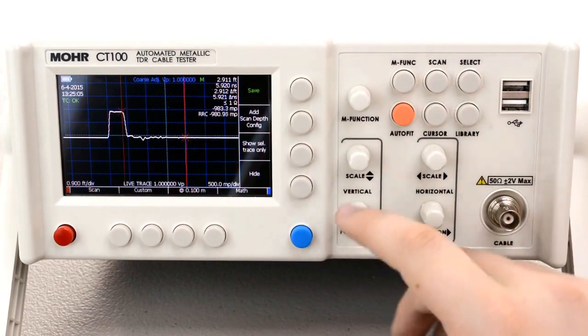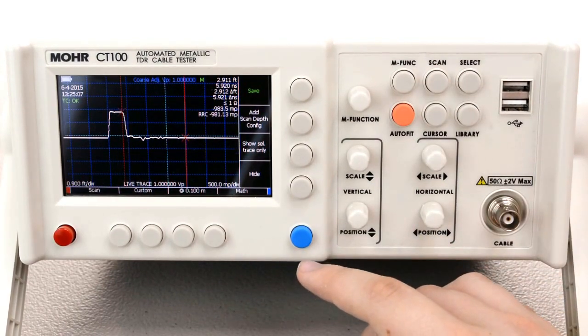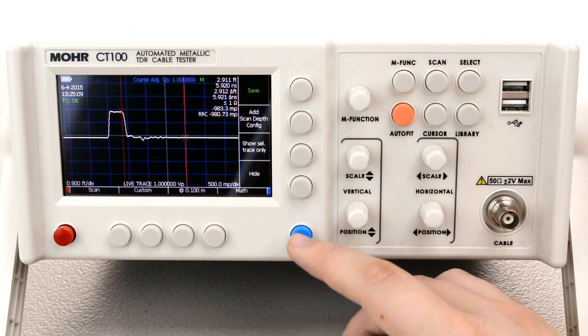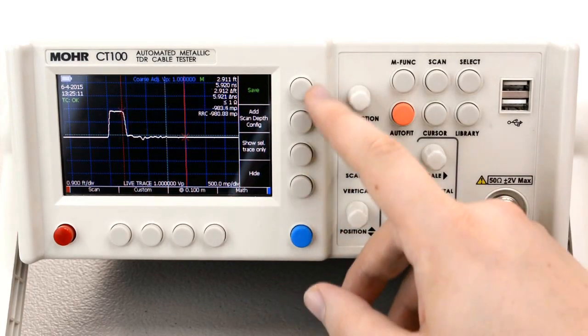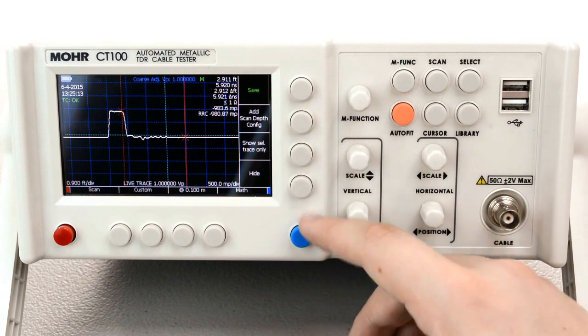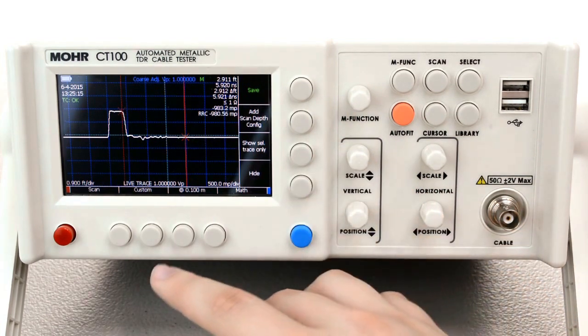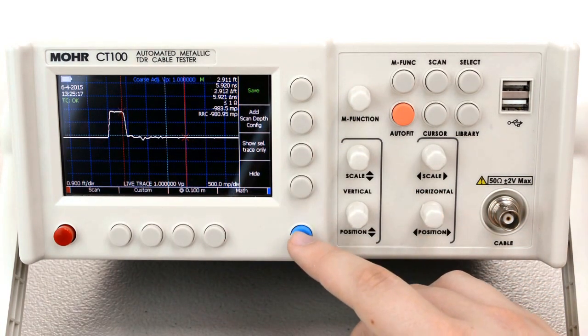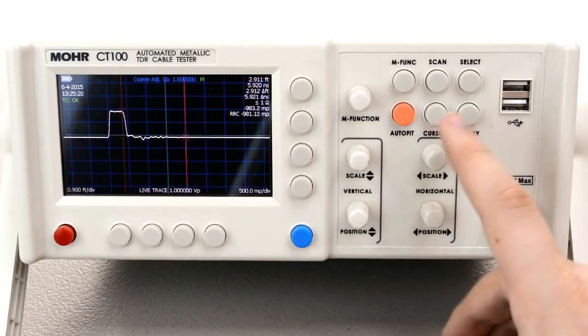The scan menu button lets you open up the scan menu obviously which allows you to save traces, add, hide, scan, custom, maths, all sorts of things. Press the main menu button and then again to close.